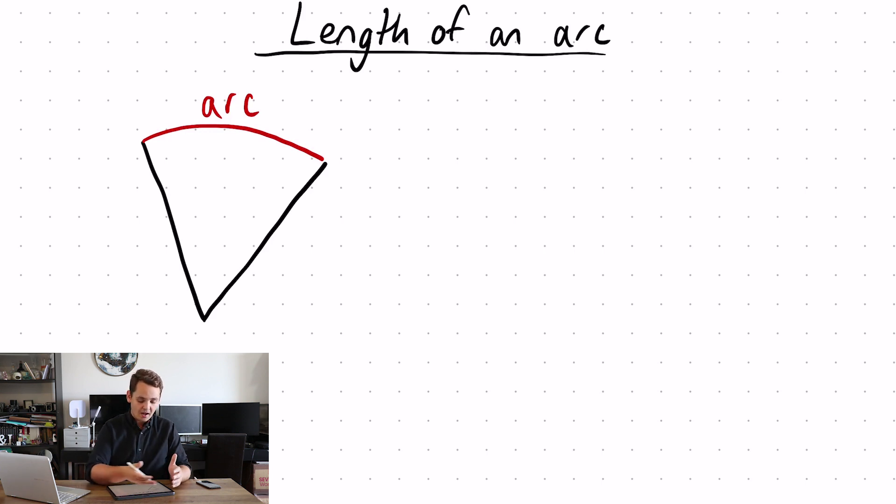An arc is a part of the circumference of a circle. So to find the length of an arc we're going to need to use our knowledge of circumference of a circle. That is, circumference is equal to 2πr.